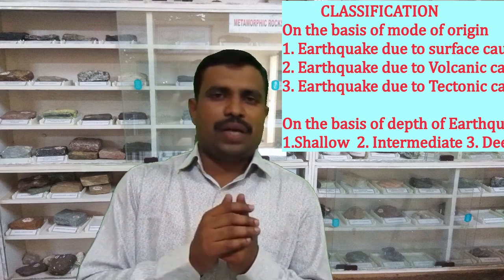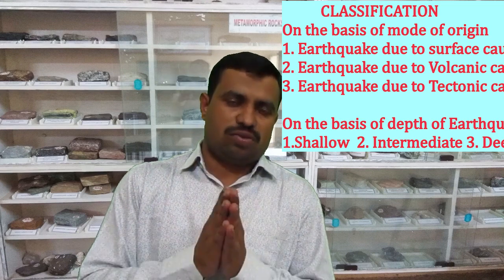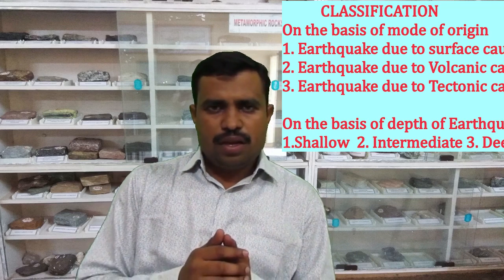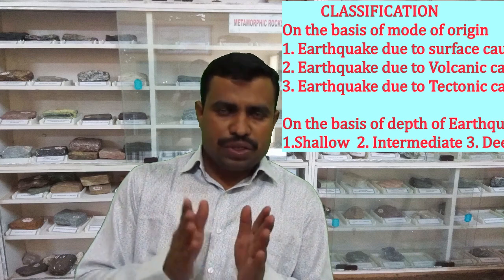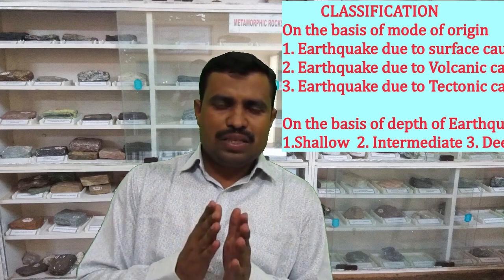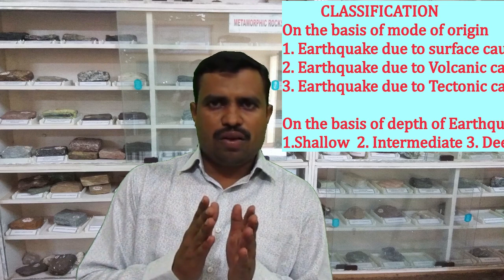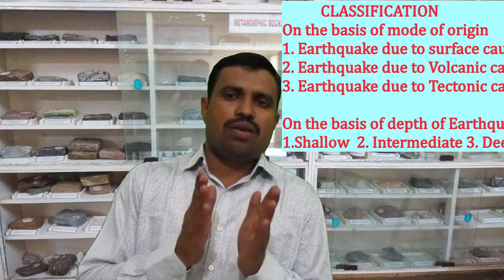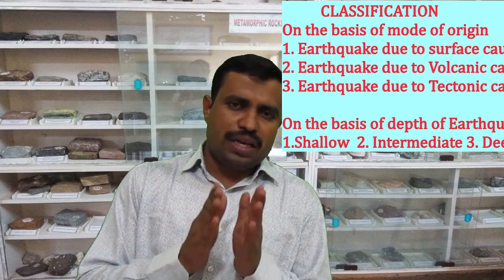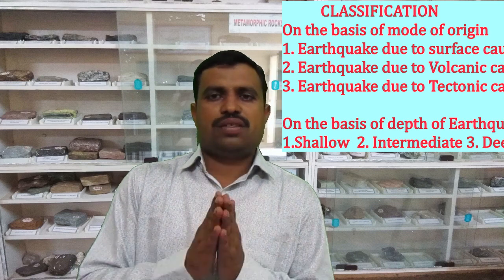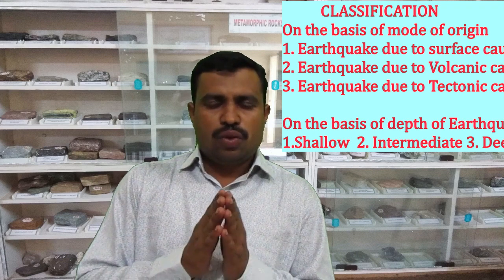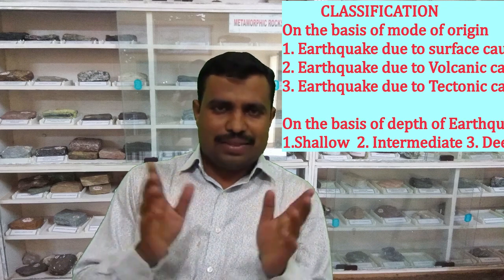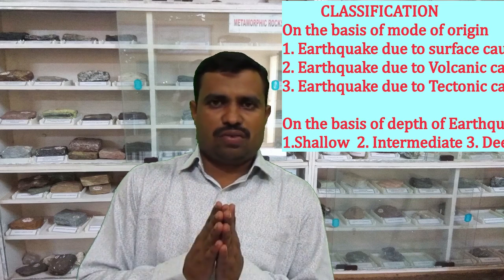The third type is earthquake due to tectonic cause. Most earthquakes — about 80 percent — are caused by tectonic activity, and they are mostly found at the boundaries of tectonic plates.